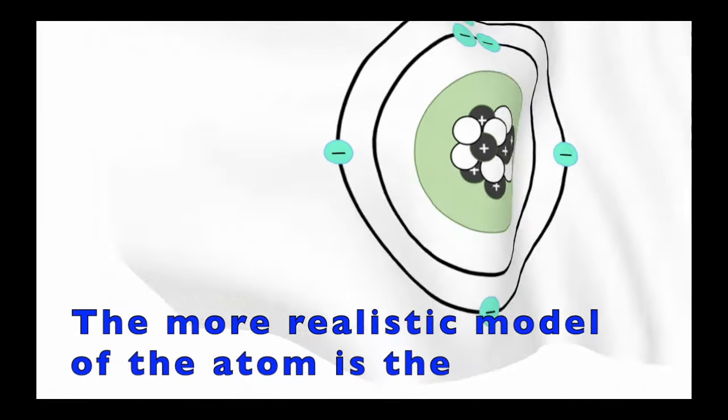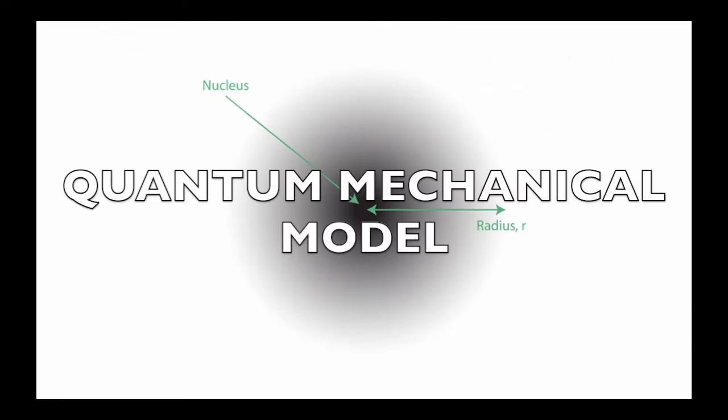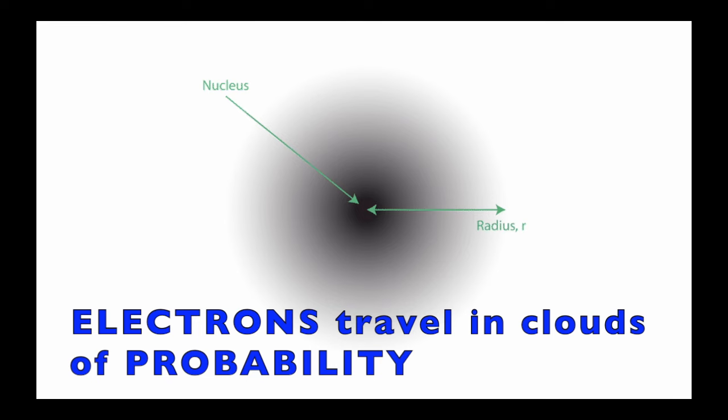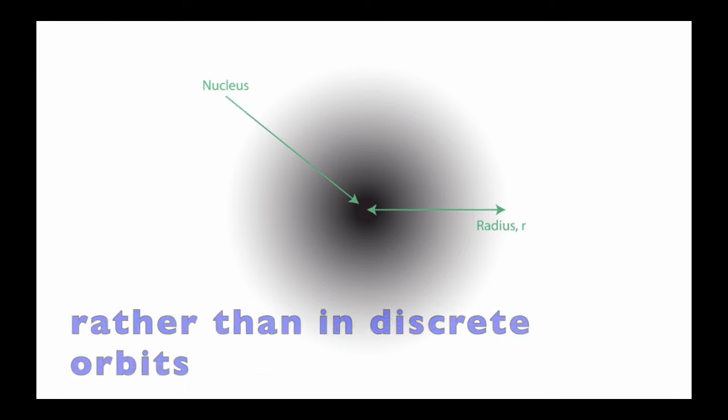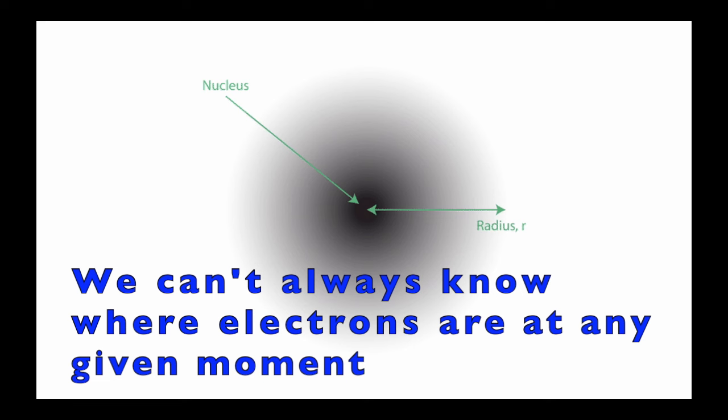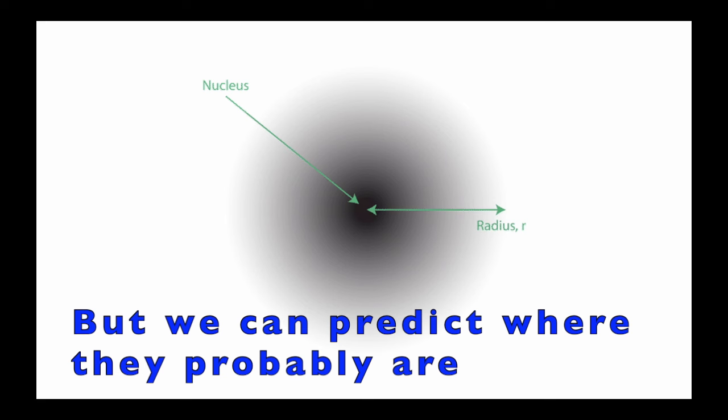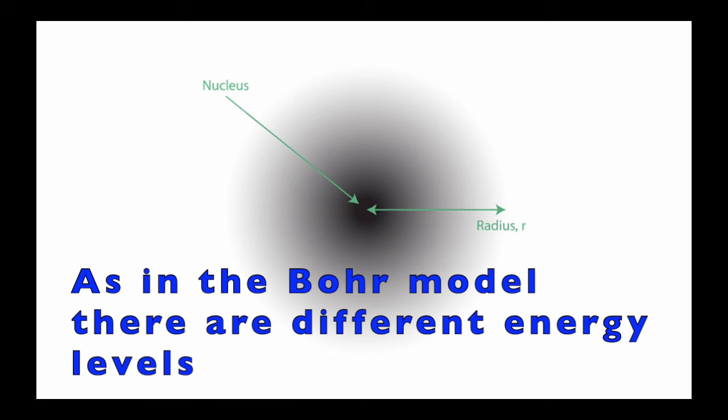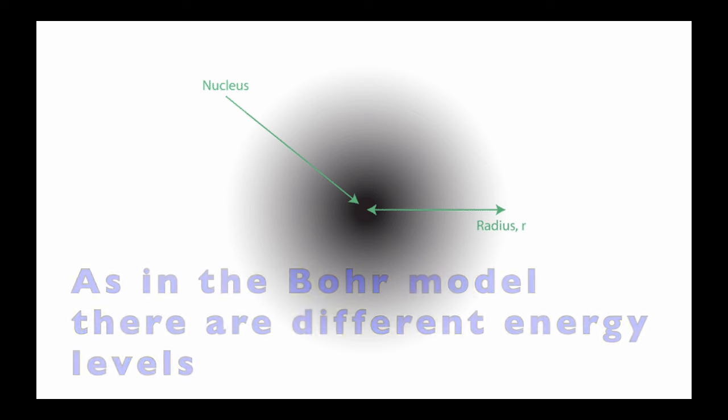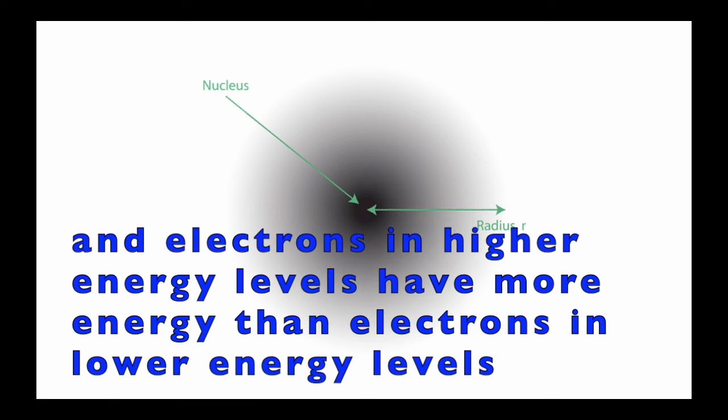The more realistic model of the atom is the quantum mechanical model. In this model, electrons travel in clouds of probability rather than in discrete orbits. We can't always know where electrons are at any given moment, but we can predict where they probably are. As in the Bohr model, there are different energy levels, and electrons in higher energy levels have more energy than electrons in lower energy levels.